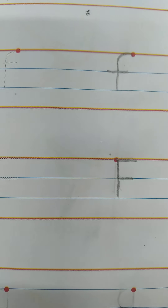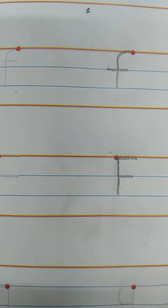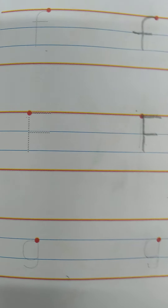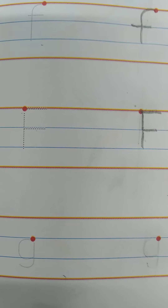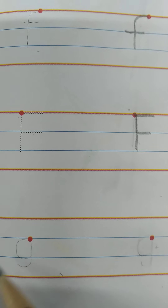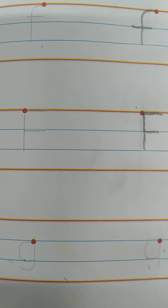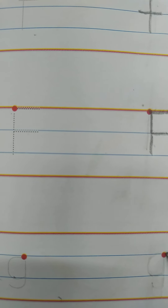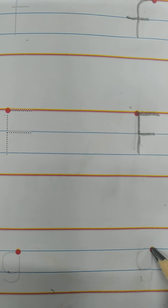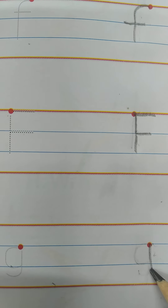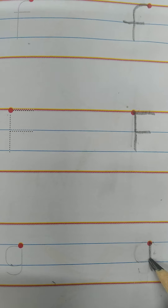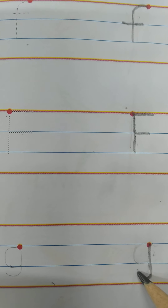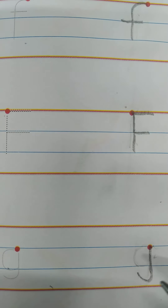Now this is small letter G. So we will start from this dot. First we will make a standing line. Then we will make a little curve like this.